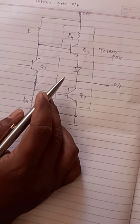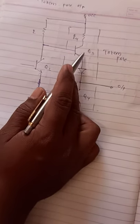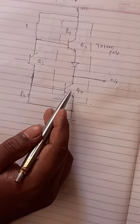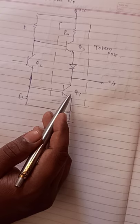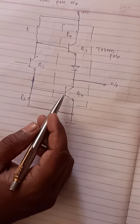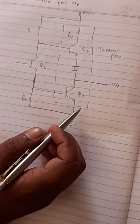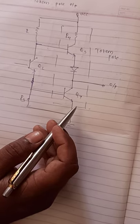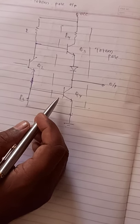Totem pole arrangement means what? Here transistor Q3 sits above transistor Q4. This is already explained, but basically this point will be asked: write a short note on totem pole output. Hence we are taking this.